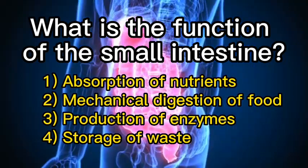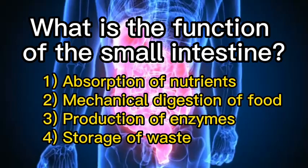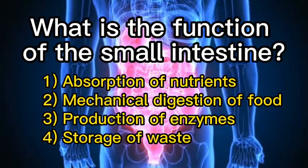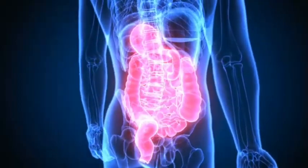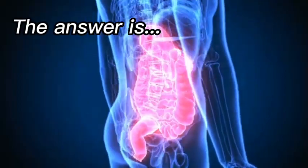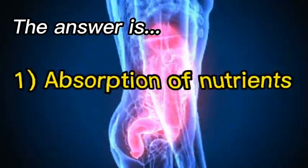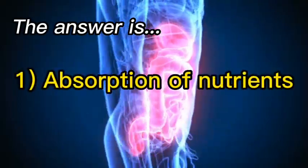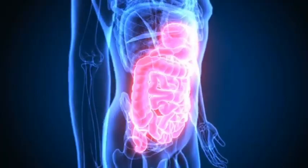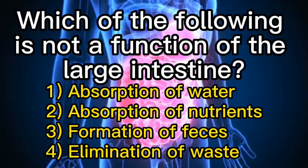What is the function of the small intestine? One: absorption of nutrients. Two: mechanical digestion of food. Three: production of enzymes. Four: storage of waste. The answer is one, absorption of nutrients.